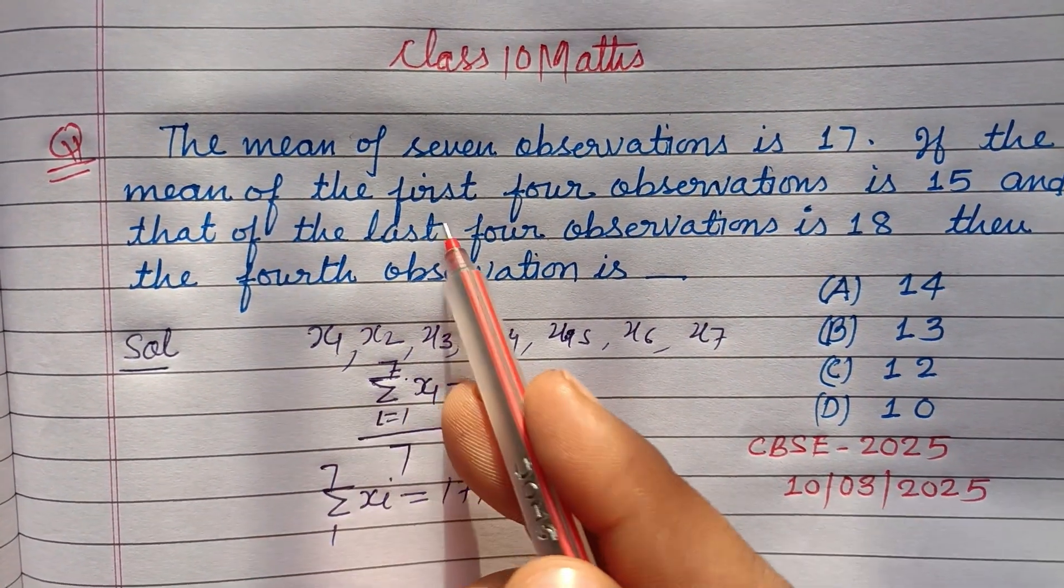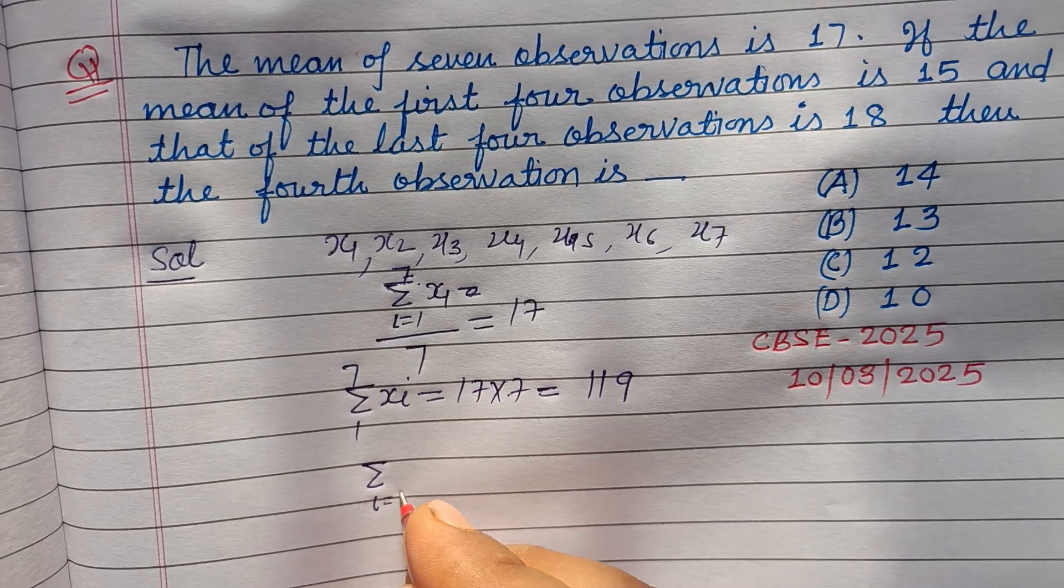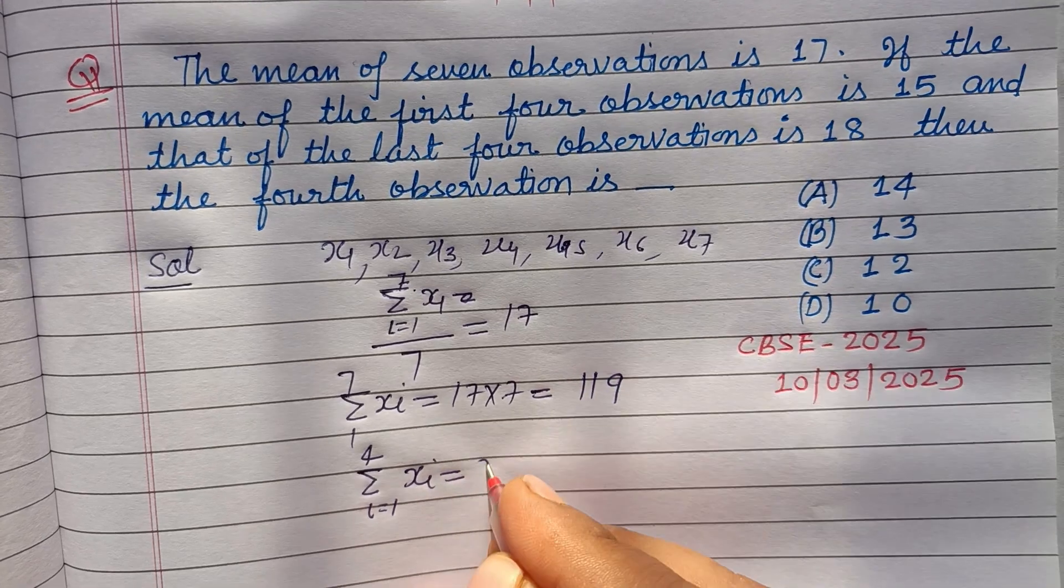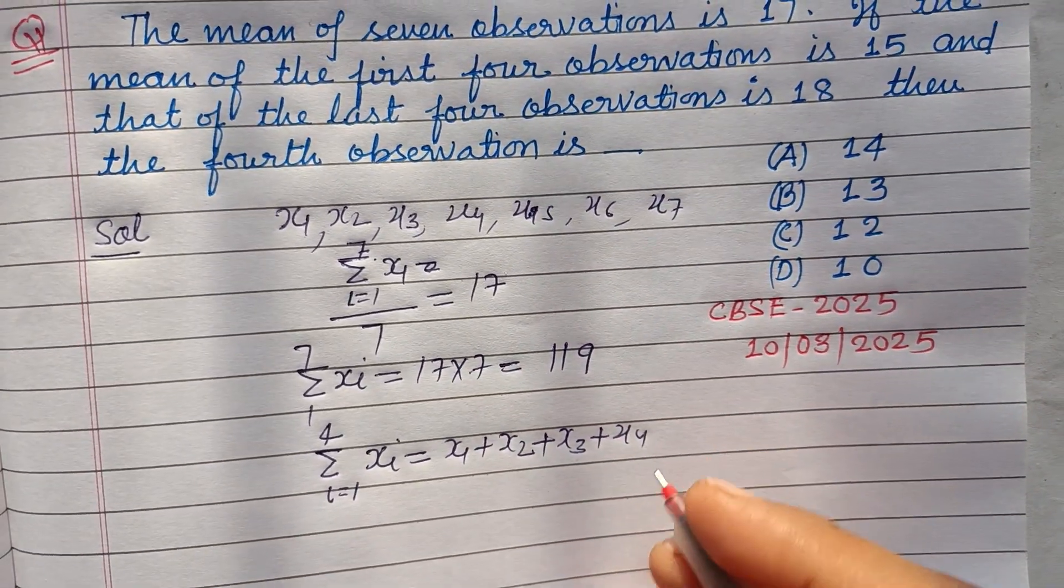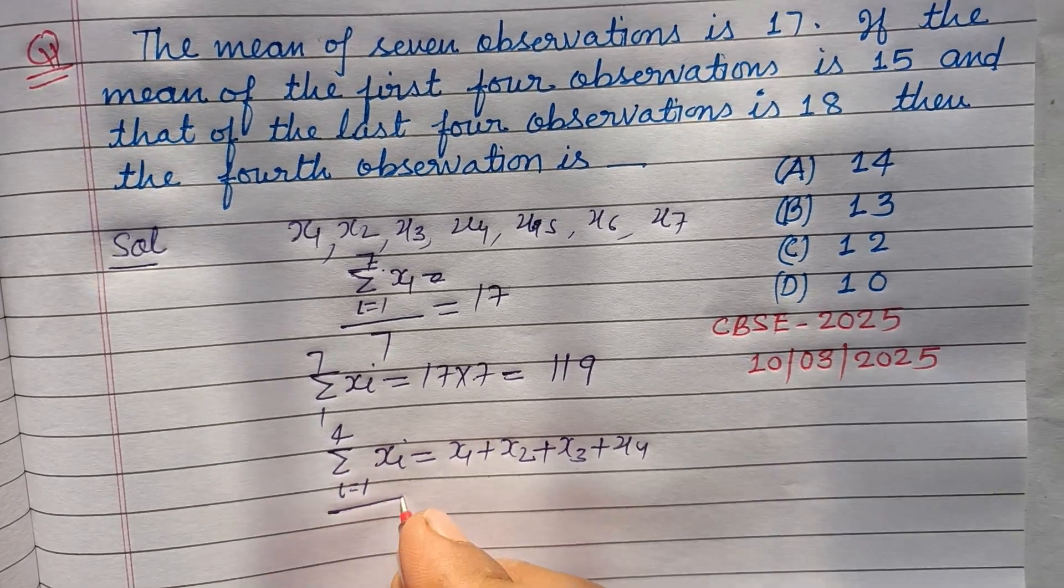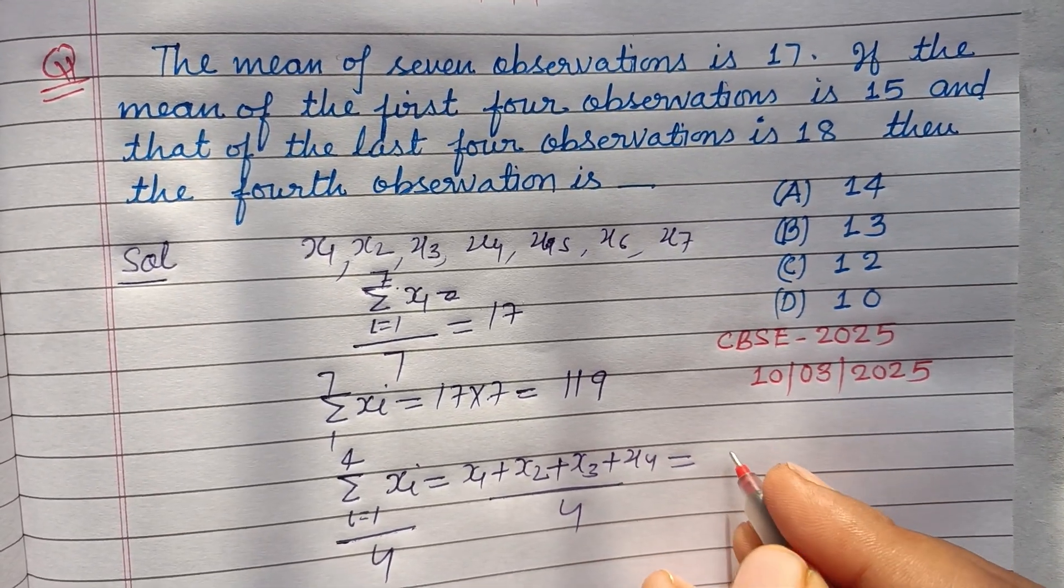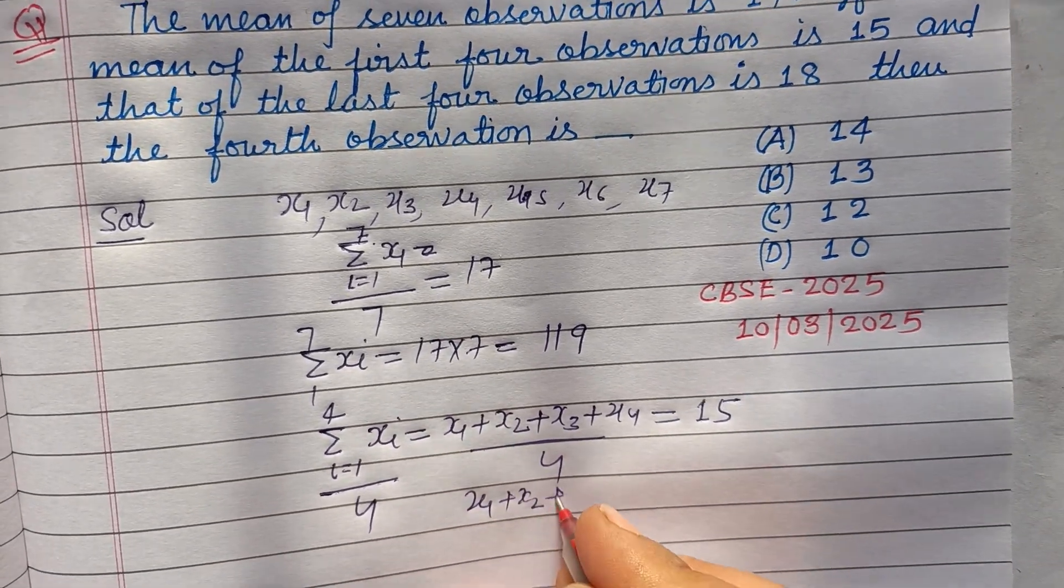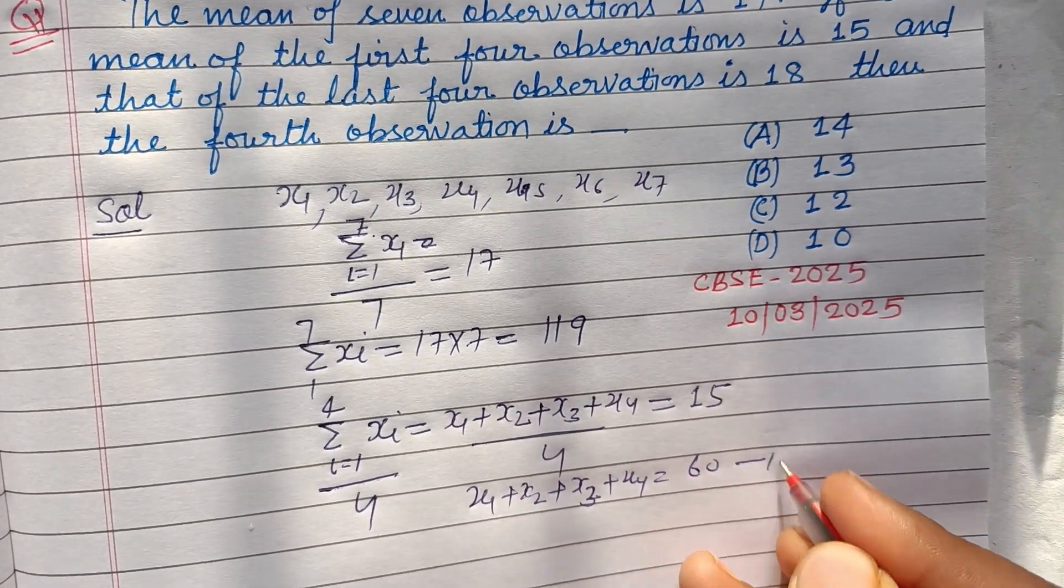Now, mean of the first 4 observations. So mean of the first 4 observations, i equals 1 to 4, xi, that is x1, x2, x3, x4 upon 4 is what? It is 15. Therefore, x1 plus x2 plus x3 plus x4 equals 15 times 4, which is 60. This is our second equation.